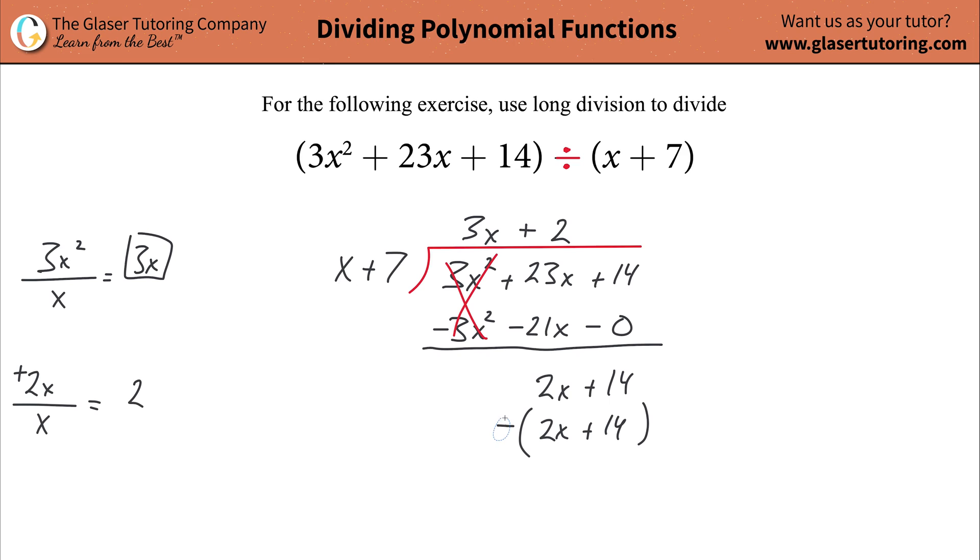Now distribute that negative symbol. Erase your parentheses, erase any positive signs, and just plug in all the negatives. Do the math. Lo and behold this cancels, and that cancels as well. So the remainder here is going to be 0, and that's fantastic. That means we're done.